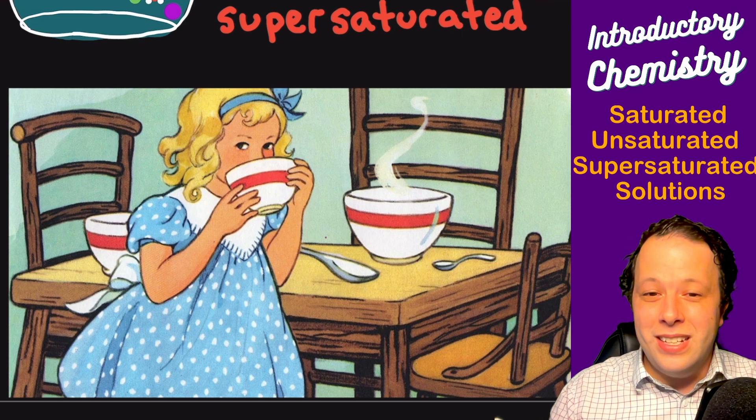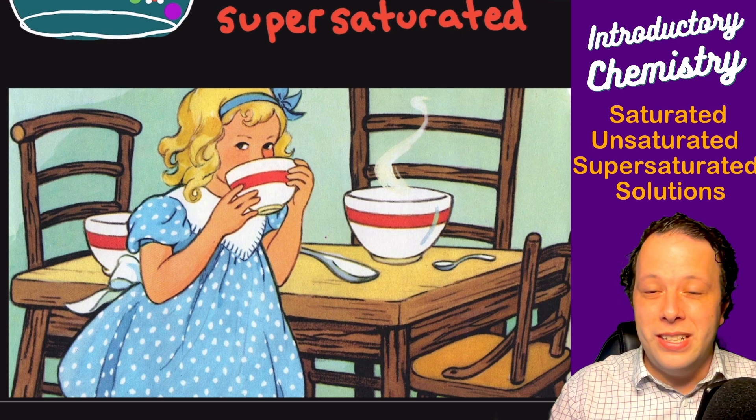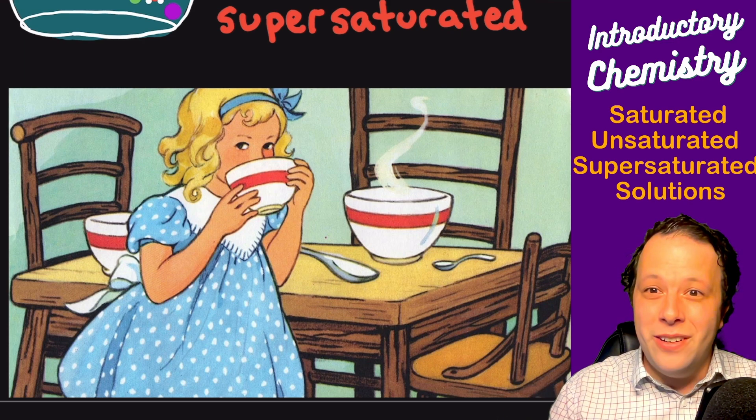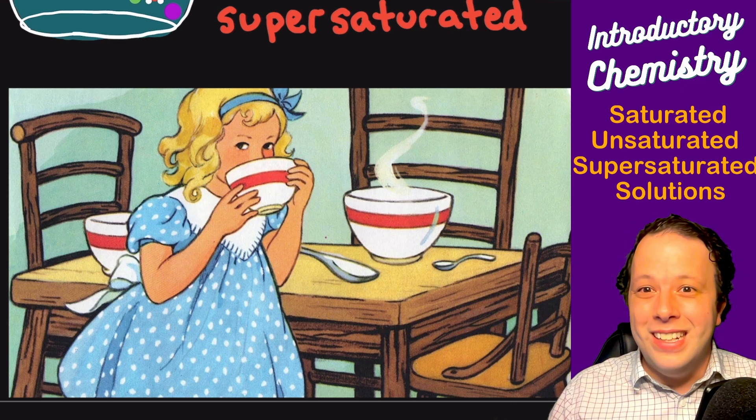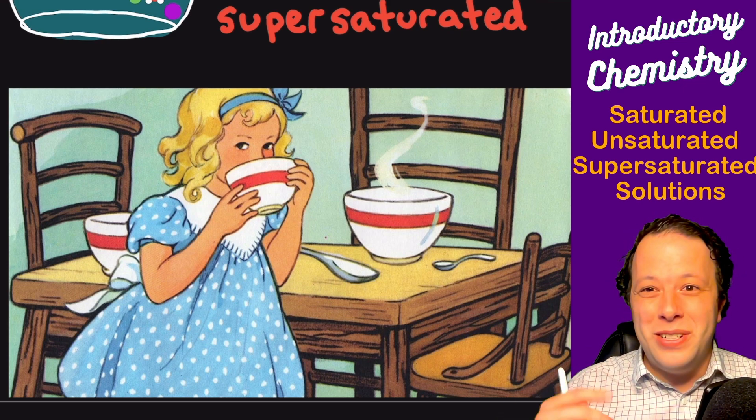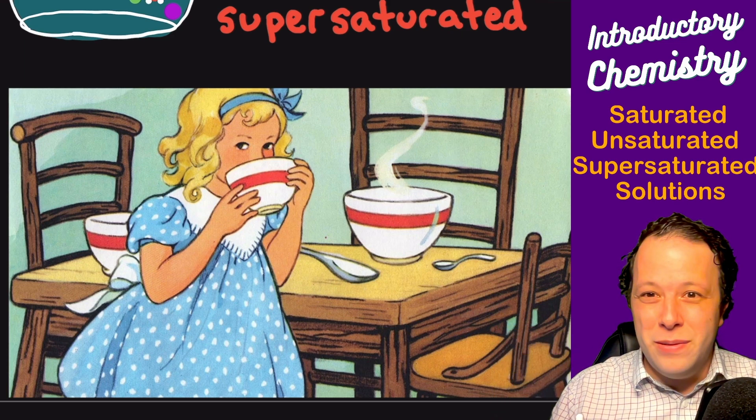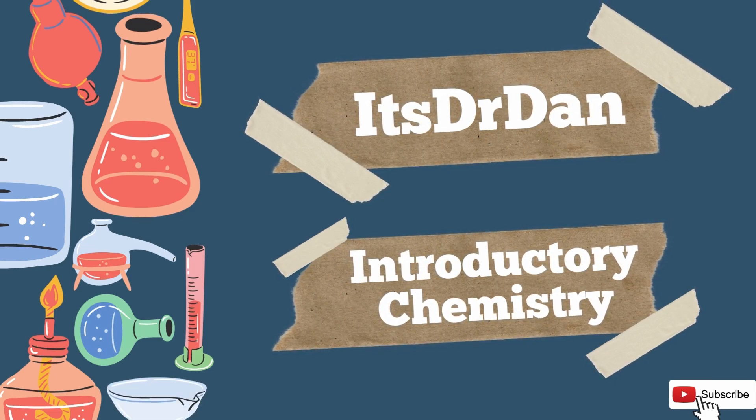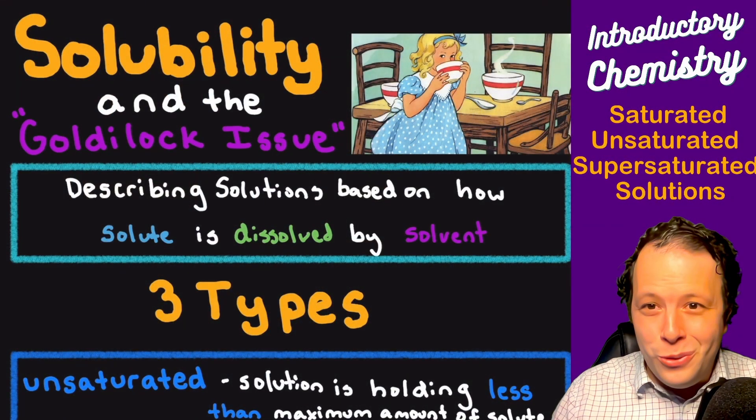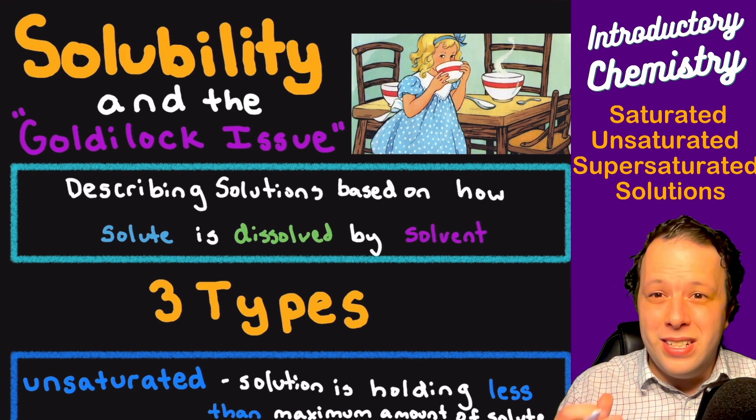We're going to take a look at this and look at the different types. We're going to learn how to read the charts for how you can actually determine what type it is, and we'll go through many different examples and demonstrations to help show you what these all look like. This is all about describing how solutions work.